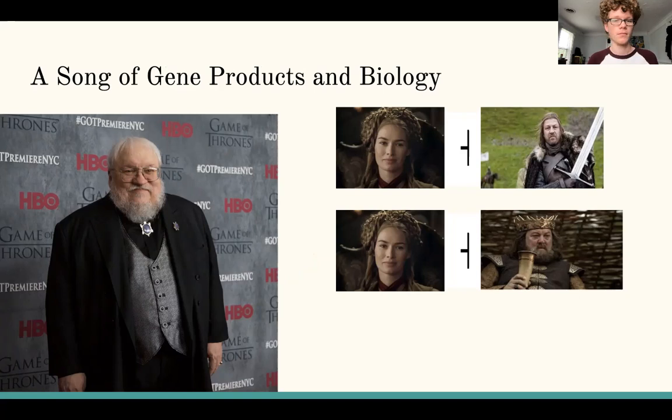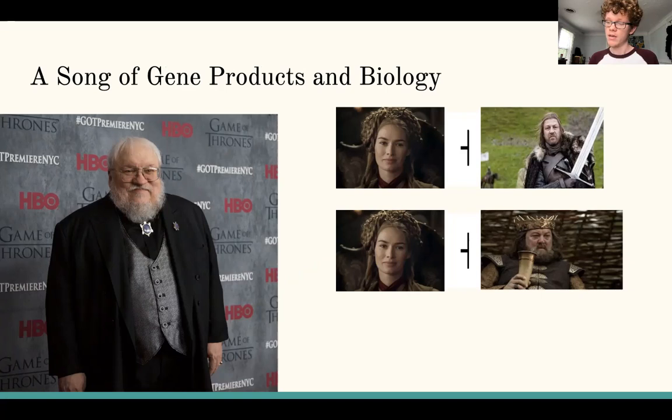So we do have to talk about a bit of the biology behind this. Cersei inhibits Ned, and in a way also inhibits Robert Baratheon. Cersei represses Robert Baratheon in the way that she represses his expression by preventing the translation of his mRNA, if we were talking in a biological sense, and these were these scientific pathways.